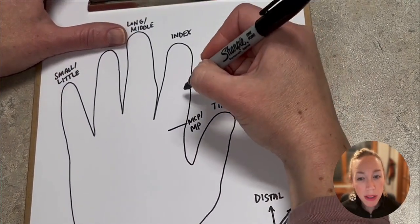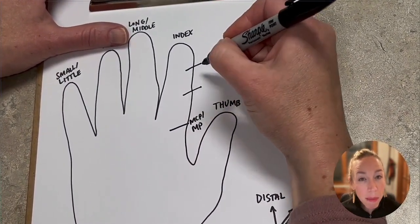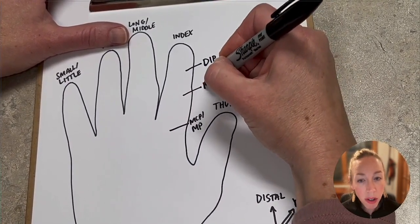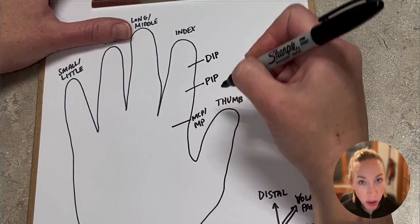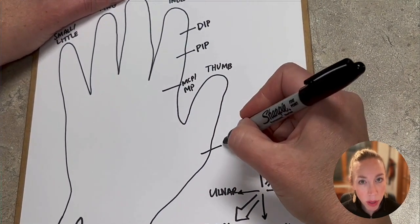Now to the joints. There's the MCP or MP joint from metacarpophalangeal. Then there are two IP joints, interphalangeal. One is more distal, one's proximal.